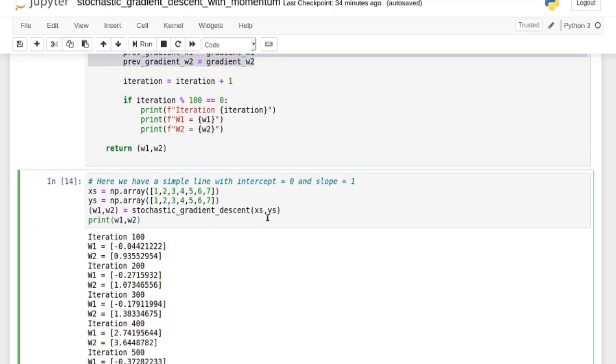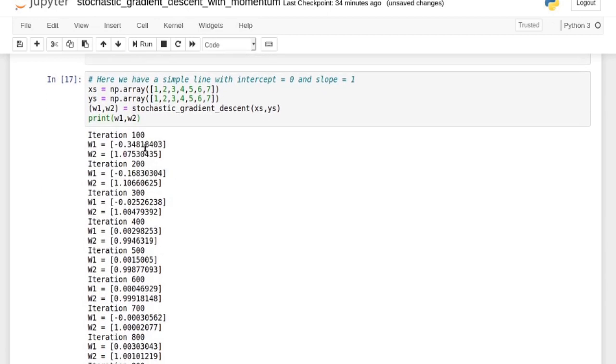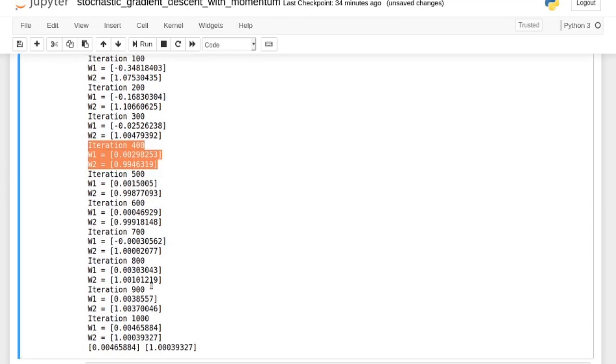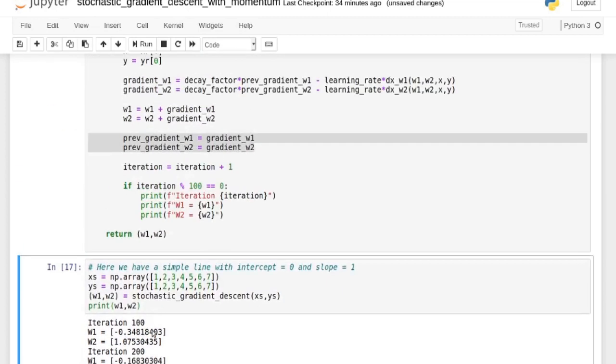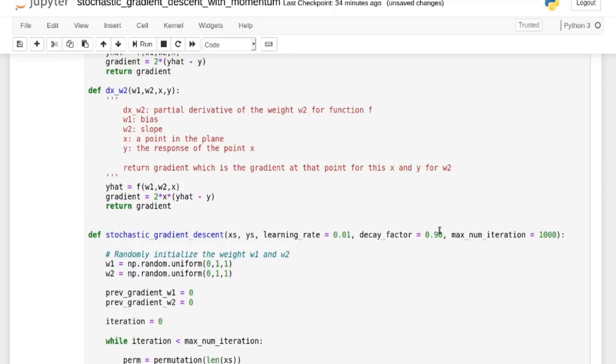And if we test it here, remember, we have a decay factor to be 0.9. Here we want to learn a line which has an intercept of 0 and a slope of 1. So let's see. What does it do? I will say at iteration 400, it's pretty much learned the thing. And then you just go down and down and down.